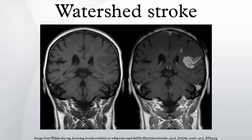Watershed strokes are localized to two primary regions of the brain, termed cortical watersheds and internal watersheds. Patients with many different cardiovascular diseases have a higher likelihood of experiencing a blood clot or loss of blood flow in border zone regions of the brain. The resulting symptoms differ based on the affected area. A CT scan and MRI are used for diagnosis, followed by treatment options including removal of atherosclerotic plaque and widening of the clogged blood vessel.